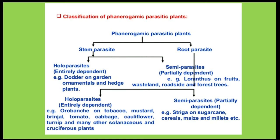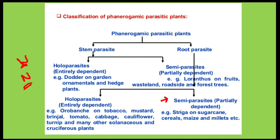Root parasites that infect the host root and are totally dependent on the host, like Orobanche, are called hollow root parasites. Semi-parasites that perform photosynthesis and make their own food but depend on the host for water and nutrients, like Striga, are semi root parasites.